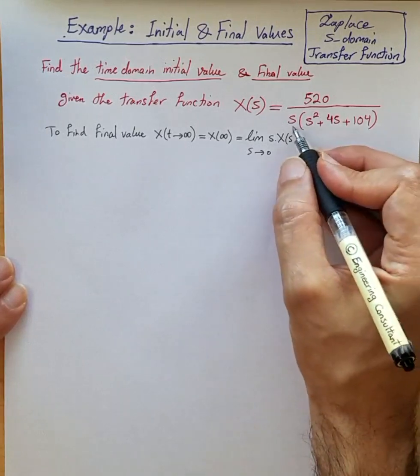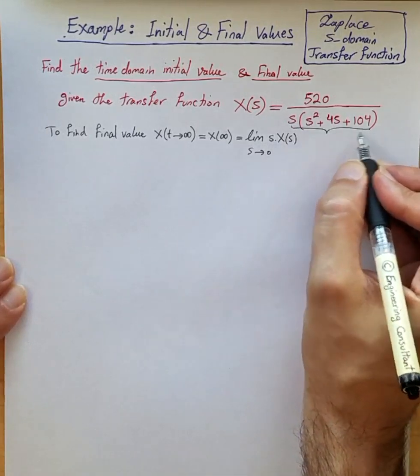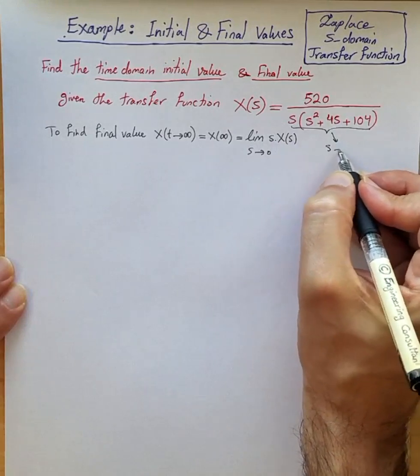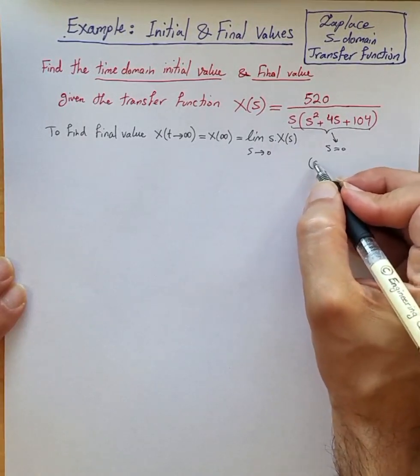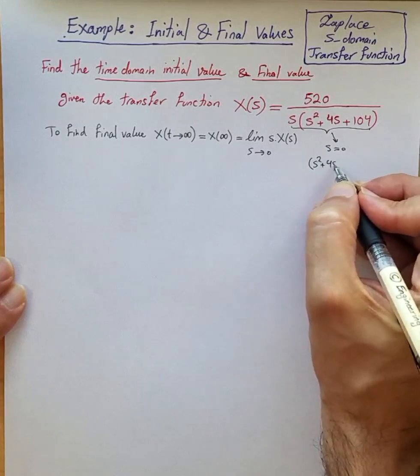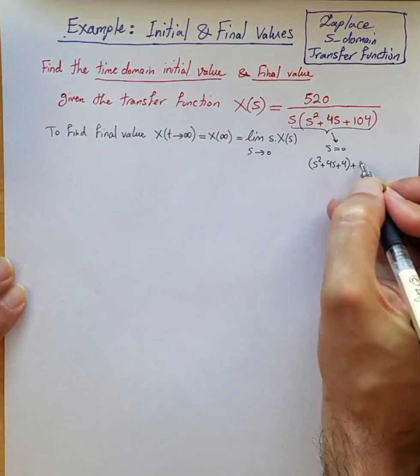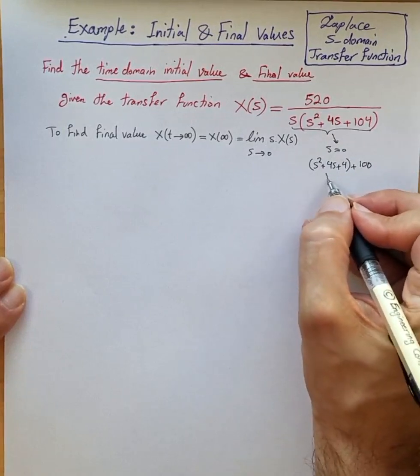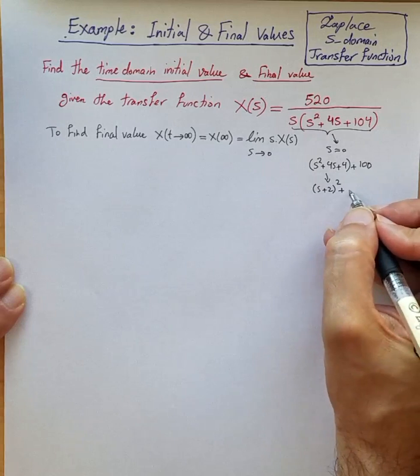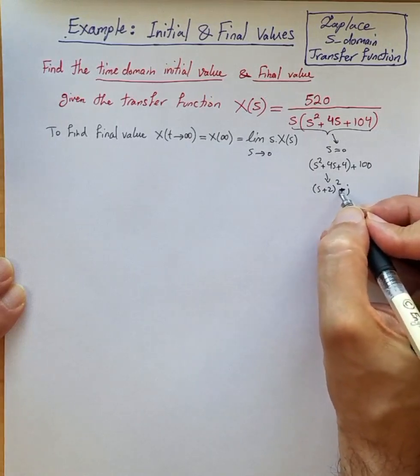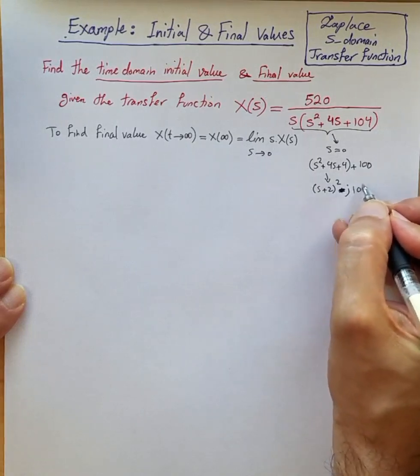In this case, when you look at this polynomial in the denominator, the poles are s=0 and for the other one you can see that it can be written as s² + 4s + 4 + 100, which can be rewritten as (s+2)² + (j10)(-j10).